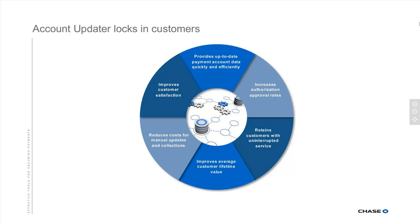Account Updater reduces your overall cost for manual updates and collections where transactions have failed and you'd otherwise have to do an outreach after the fact. Especially if you're delivering product, you don't want to hold up inventory or ship without getting paid. It helps you reduce your overall operating expense. And my favorite: increasing customer satisfaction — customers don't have to worry about who to call when they get a new card in the mail to make sure all their merchants have the new card number.